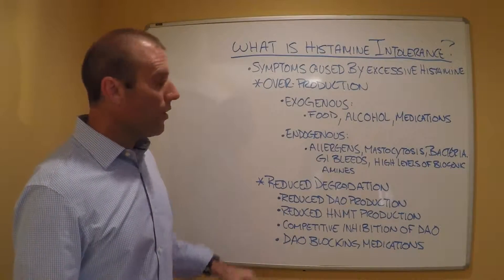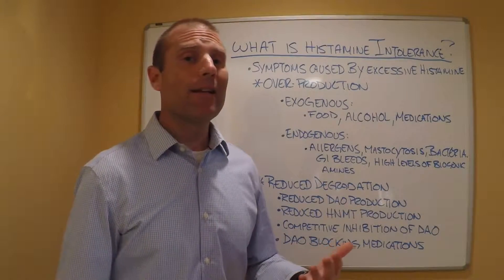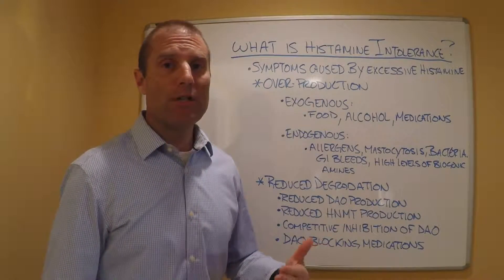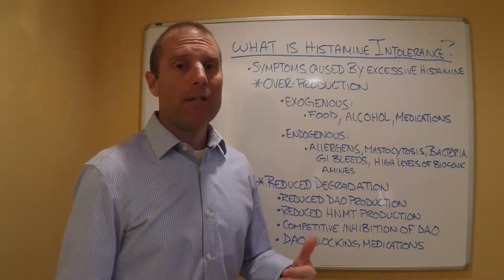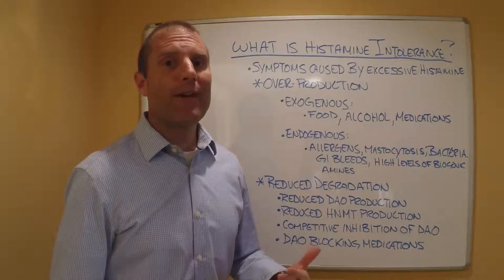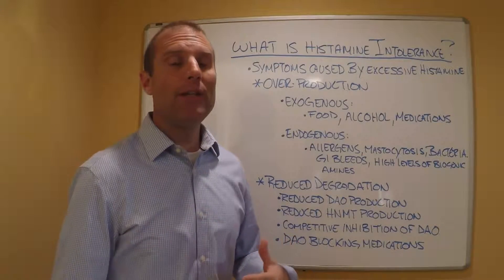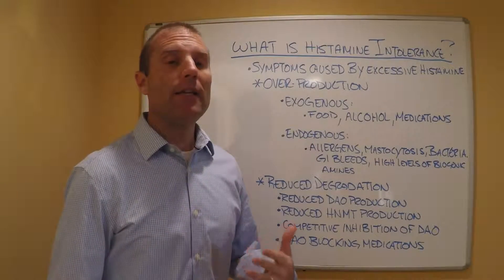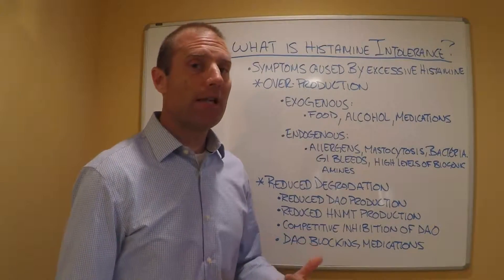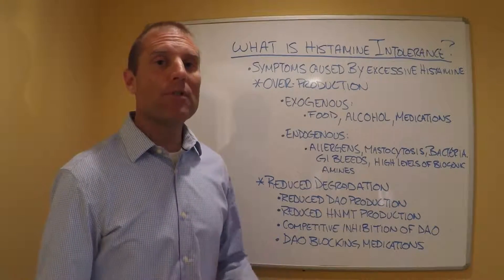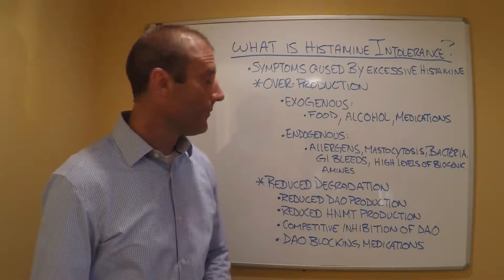Reduced DAO production could be caused by genetics, like a SNP, or epigenetics affecting the enzyme. It could also be caused by factors like leaky gut — a lot of the DAO is produced in the intestines, so if a patient has leaky gut, they may have damage to the intestinal lining which affects their DAO production.